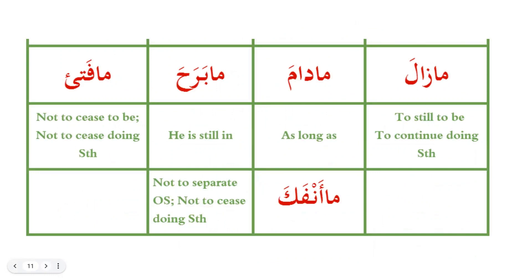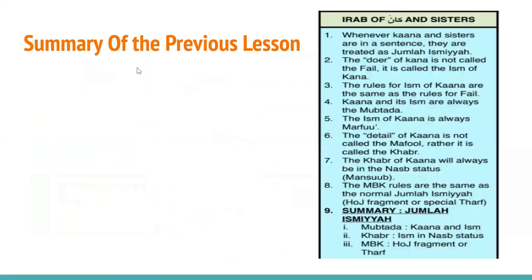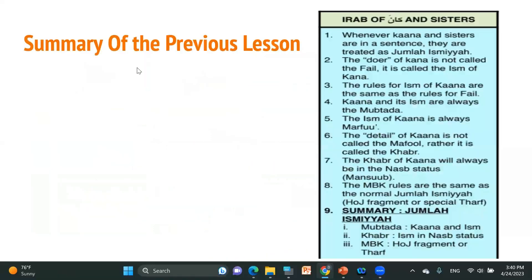We learned all these af'alun naqisa in the previous lesson. We also learned that because this is an incomplete fail, the sentences in which these af'alun come are termed as jumlah ismiya, not jumlah felia. Here is the summary of the previous lesson.